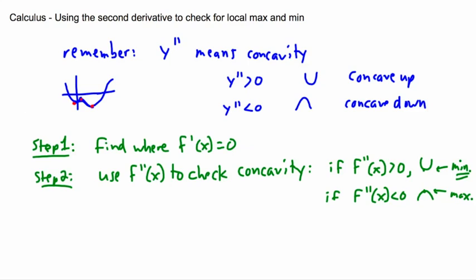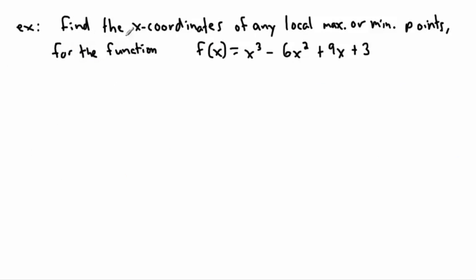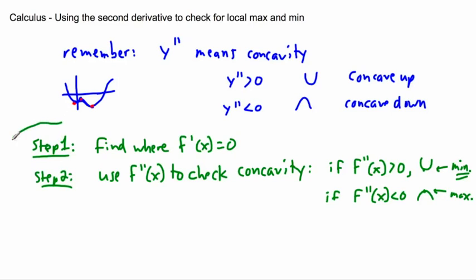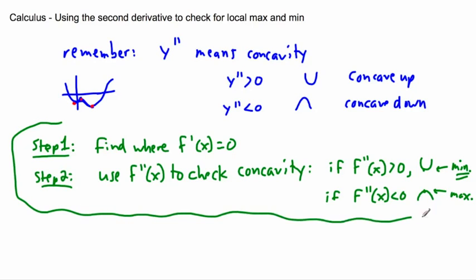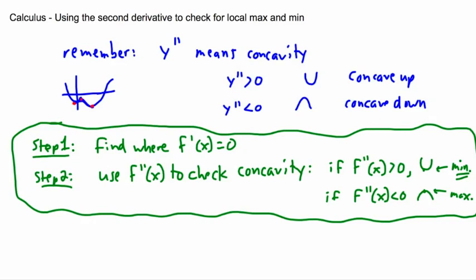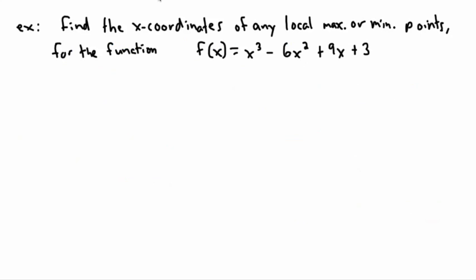Let's do an example. Find the x-coordinates only of any local max or min points for this function: f(x) = x³ − 6x² + 9x + 3. Step one: find where the derivative is zero.